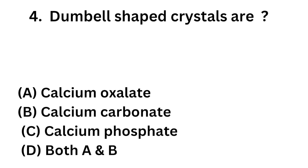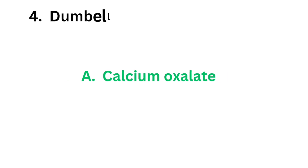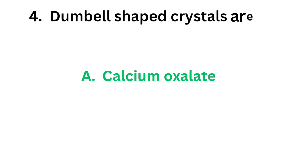Heat and acetic acid is a qualitative test for urinary protein. Proteins are coagulated and denatured by heat; the addition of weak acetic acid, that is 3 to 5 percentage, facilitates precipitation of protein. Question number four: dumbbell shaped crystals are — option A: calcium oxalate, option B: calcium carbonate, option C: calcium phosphate, option D: both A and B. The correct answer is option A, calcium oxalate. Dumbbell shaped crystals are calcium oxalate; they are colorless, octahedral or envelope shaped, rarely seen in dumbbell shape.